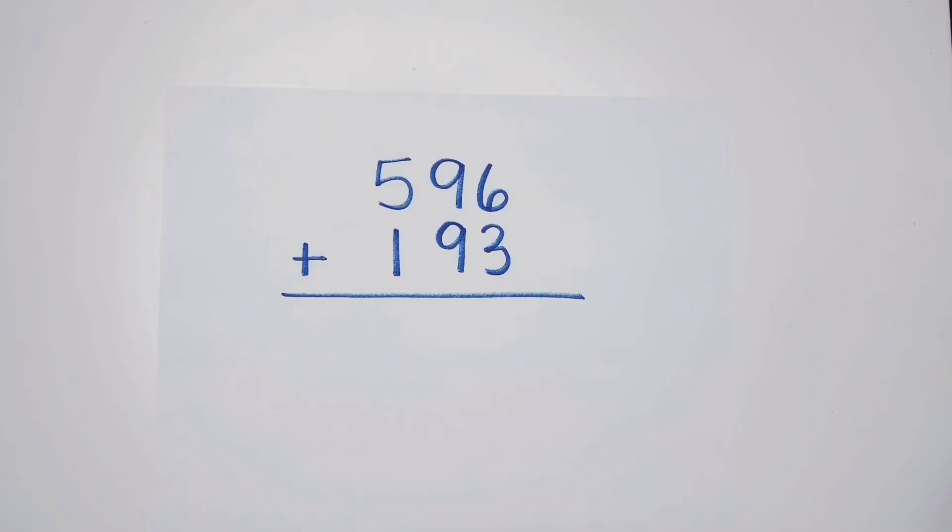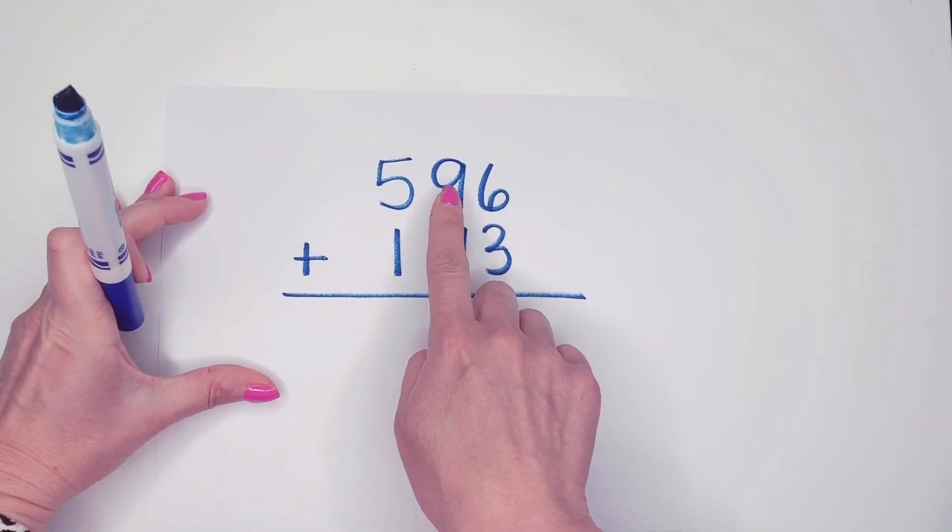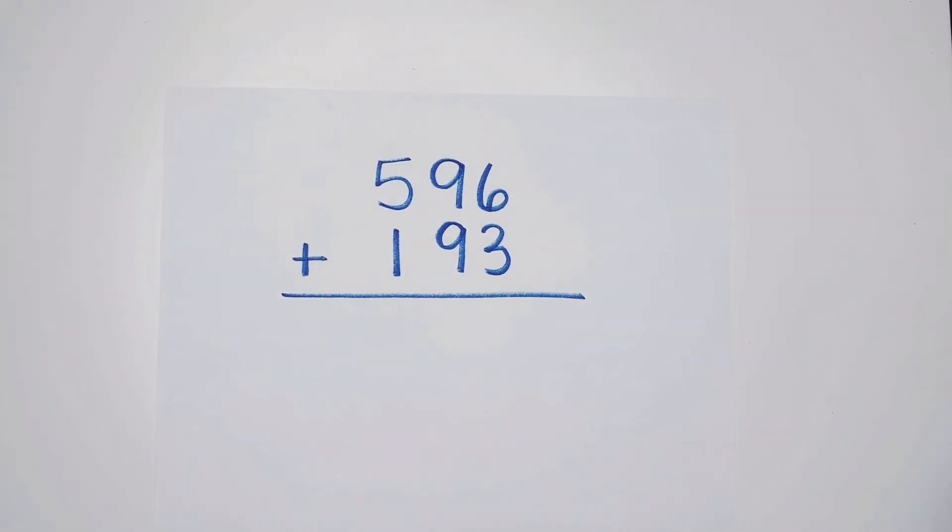Let's try another example. This time I'm not going to draw the lines between our ones, tens, and our hundreds. I'm going to keep that straight in my mind and think about it as I do the problem.